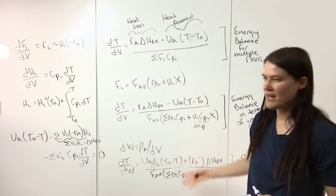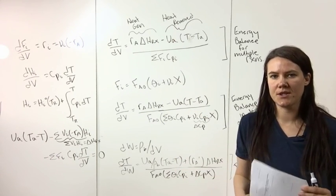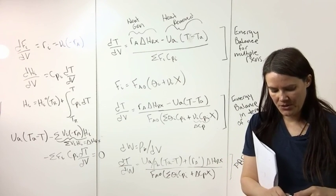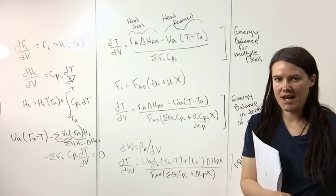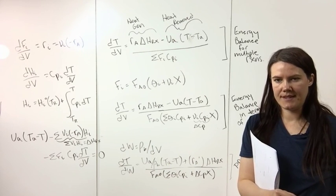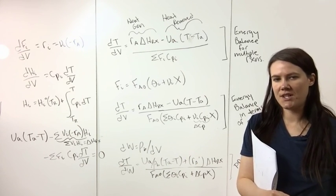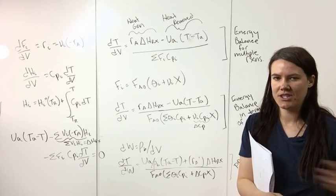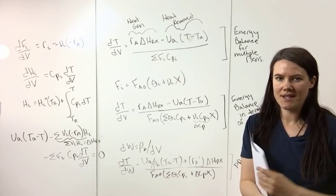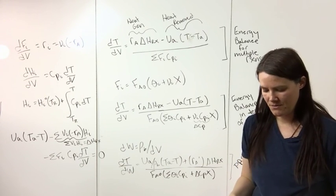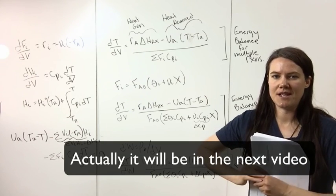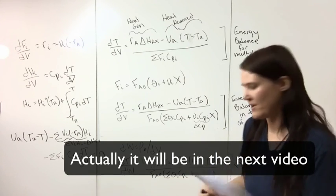In these equations, we're assuming that the heat transfer fluid — say, in a cooling jacket — doesn't change temperature down the length of the reactor. But what if it does? We'll need an equation to account for that, which will be covered next.